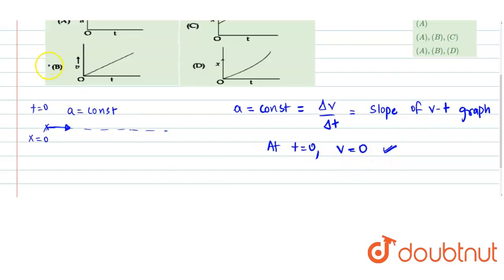Right, so that we can see which is represented here in the v-t graph. Line slope is constant and it is starting from origin. This is the first method.